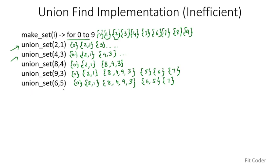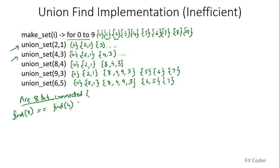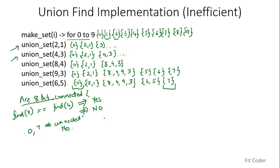Now if someone asks whether 8 and 4 are connected, we call find(8) and find(4). If both return the same representative, we say yes, they are connected — they are in the same set. If they return different values, they are not in the same set. For example, find(0) and find(7) return different sets, so 0 and 7 are not connected.